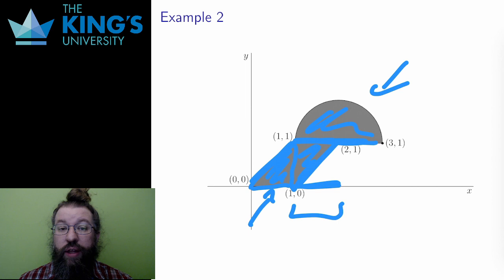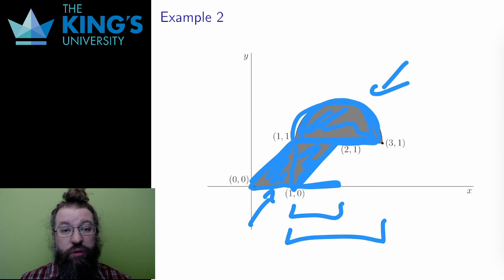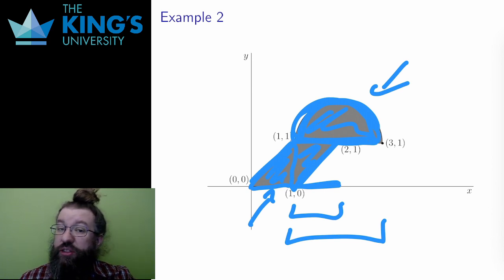Finally, for the half circle, the x bounds are 1 to 3, and the y bounds are y = 1 up to the arc of the top of the circle. This is an offset circle, and it has equation (x - 2)² + (y - 1)² = 1, and if I solve for y, taking the positive square root, because I want the upper arc of the circle, I get that y = 1 + √(1 - (x - 2)²). That will be the upper bound.